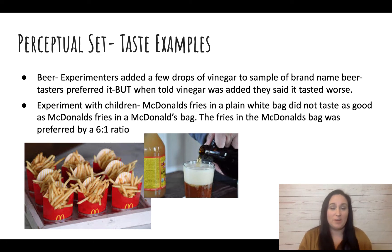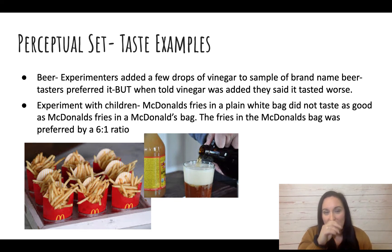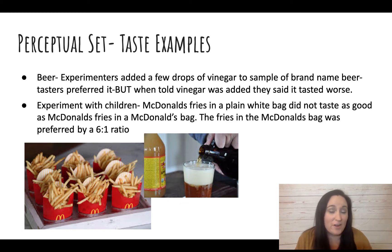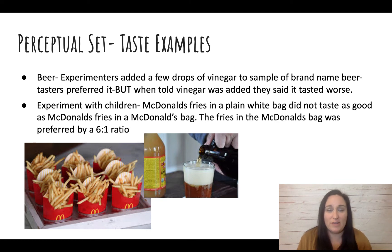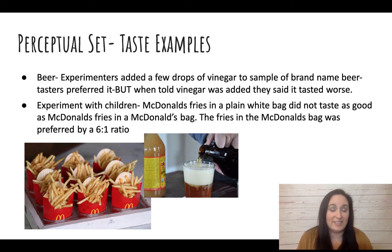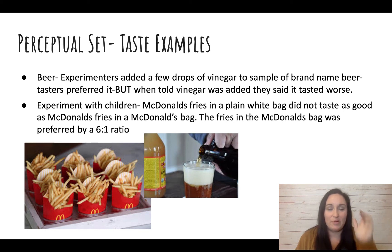Another example of perception — not visual — is with taste. You can do this with any of the senses. In one experiment, they added a few drops of vinegar to a brand-name beer sample and the tasters preferred it. But when they were told vinegar was added, those people said it tasted worse. If we expect something to taste gross, it's more likely to taste gross. Similarly, children said McDonald's fries in a plain white bag didn't taste as good as the same fries in a McDonald's bag — they were the exact same fries. The perception that they were McDonald's fries made them taste better.